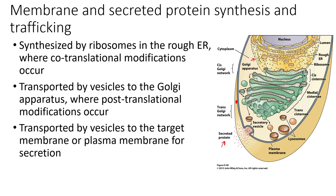When the signal sequence starts to get translated, that is a clue for the ribosome to start moving over to the rough ER, as we can see in this diagram. The rough ER is dotted with ribosomes — all of these ribosomes are busy translating proteins that are ultimately going to be placed in the cell membrane or secreted outside of the cell. The ribosome docks itself on the outside of the rough ER and translates the protein directly into the lumen of the rough ER.